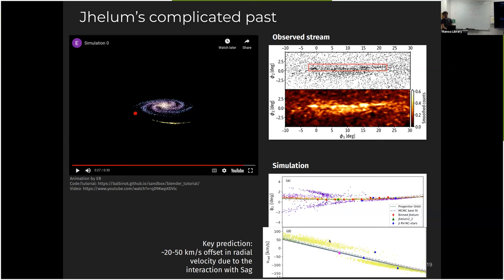And one key prediction of this model is that these off-stream components should have a large velocity offset when we look at the radial velocity of these things. So roughly 20 to 50 km/s, which is what I show here. So this is just the x-coordinate of the stream, and then the straight line shows the velocity expected for the narrow component, and the yellow dots show the expected velocity for the off-stream.